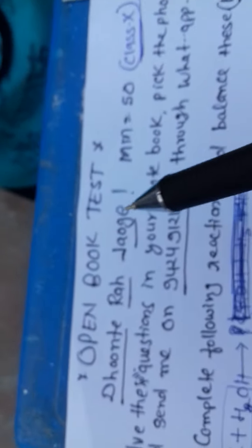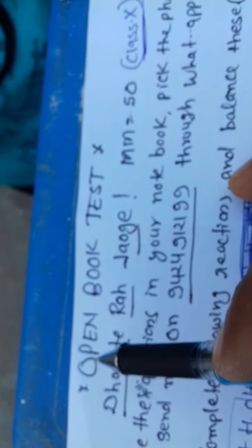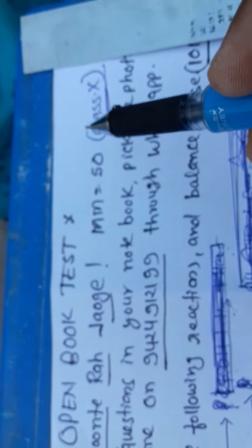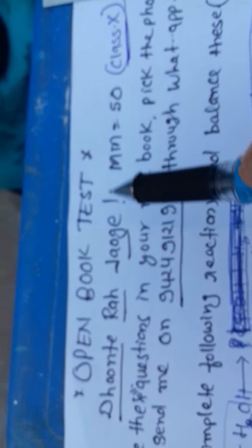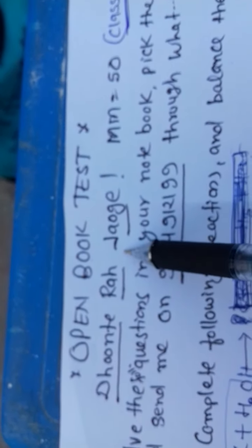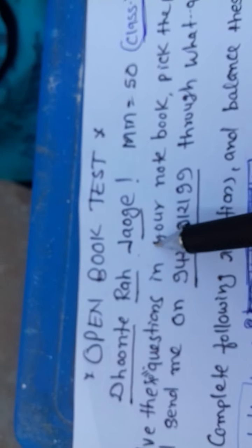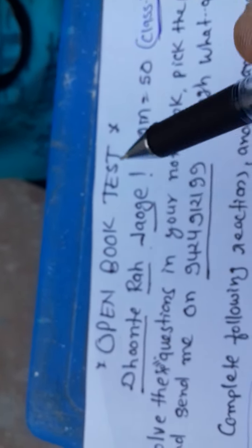Dear students, Namaskar. Today there is an open book test for you Class 10, 50 marks, and the title is Dhoor Te Reha Jao Ge. It means this question paper is based on your understanding level, your concept based.